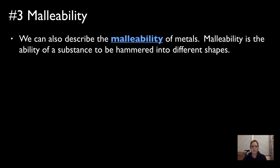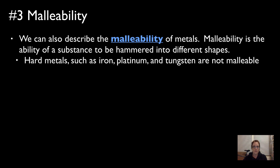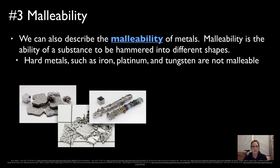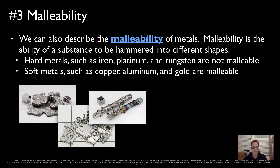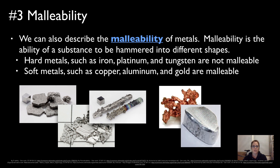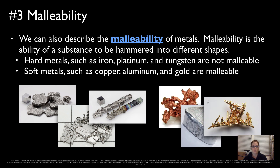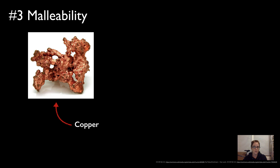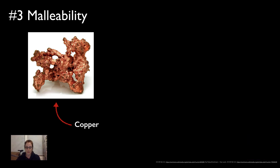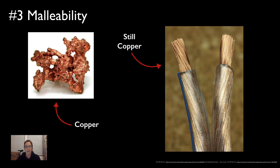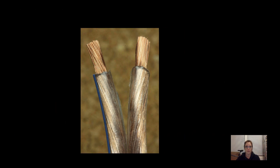Malleability is the ability of a substance to be hammered or rolled into different shapes. Hard metals such as iron, platinum, and tungsten are not malleable — we can't easily bend them into different shapes. Soft metals such as copper, aluminum, and gold are fairly malleable. Copper, for example, can be bent and rolled out into copper electrical wiring, but it's still copper — it doesn't lose its identity.